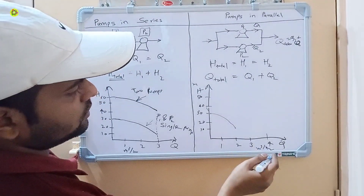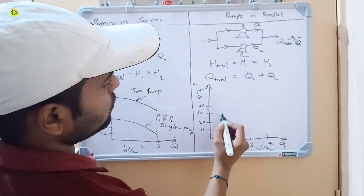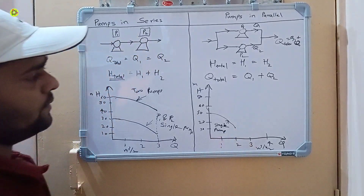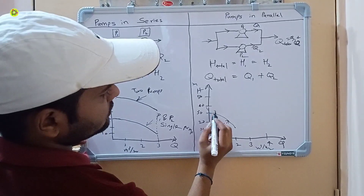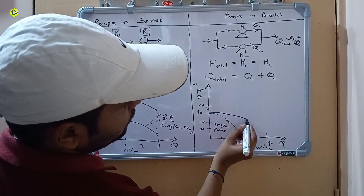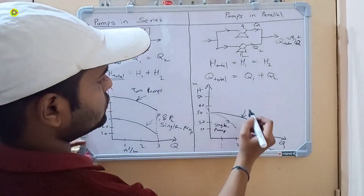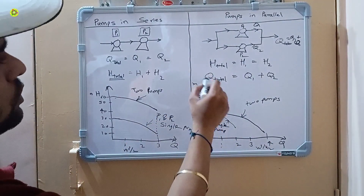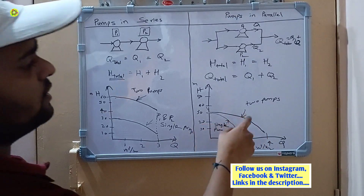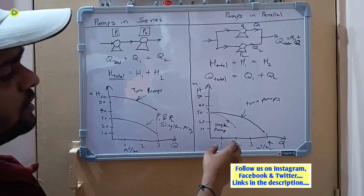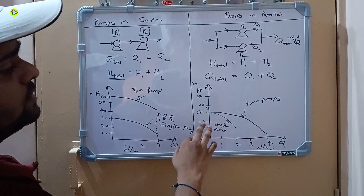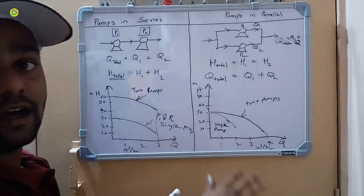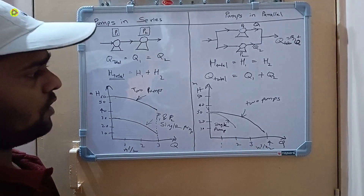For a single pump, the flow rate is about two meter cube per hour. For two pumps in parallel, the head remains constant but the flow rate increases to nearly double — approximately four meter cube per hour. Q total equals Q1 plus Q2, as shown on the curve for two pumps.